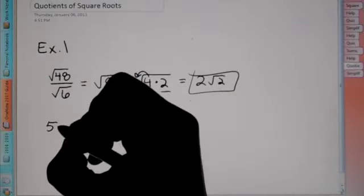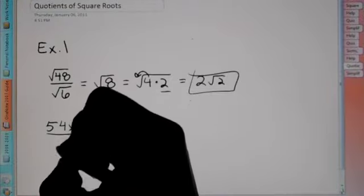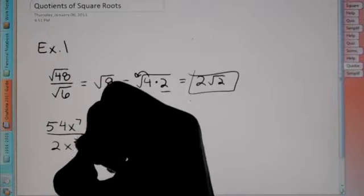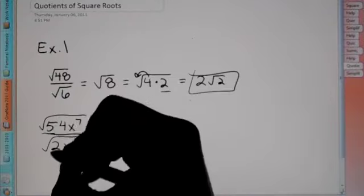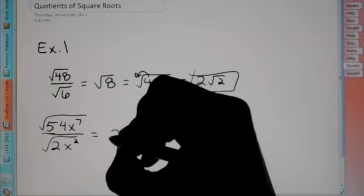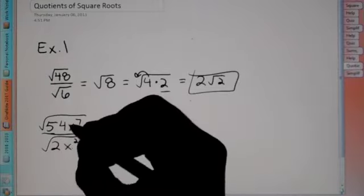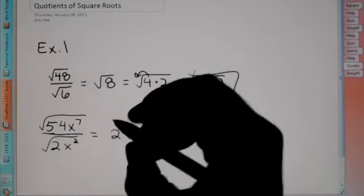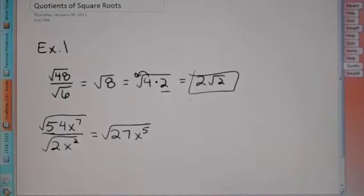Another problem — let's go ahead and throw in a variable. We have the square root of 54x to the 7th over the square root of 2x squared. Both are rooted. With the coefficients, you're going to divide: 54 divided by 2 gives us 27. And remember, if you have the same variable top and bottom, you subtract the exponents. So 7 minus 2 is 5. Now we have root 27x to the 5th.